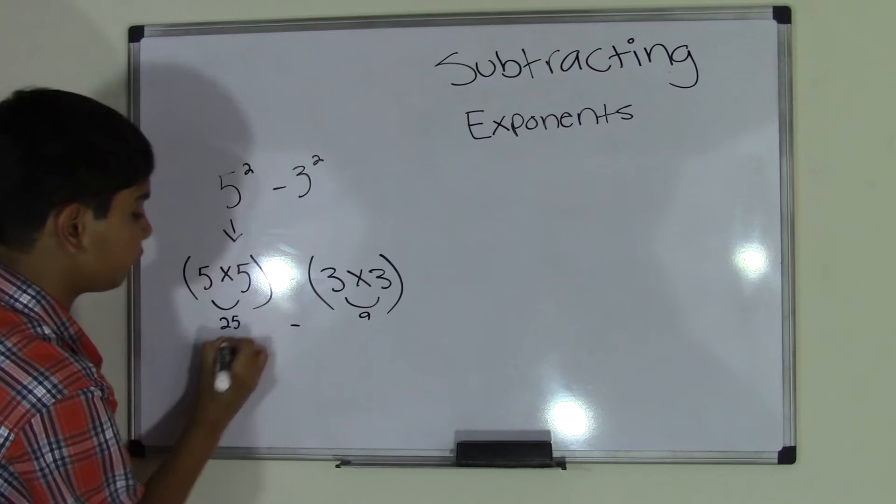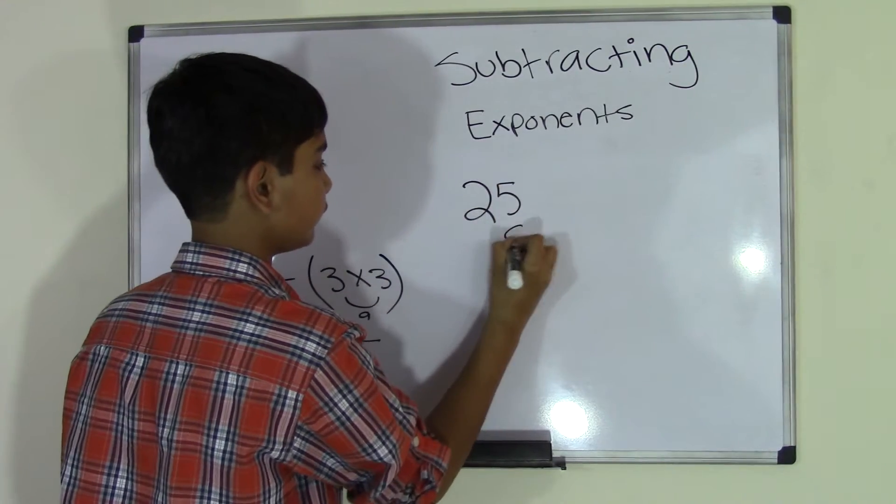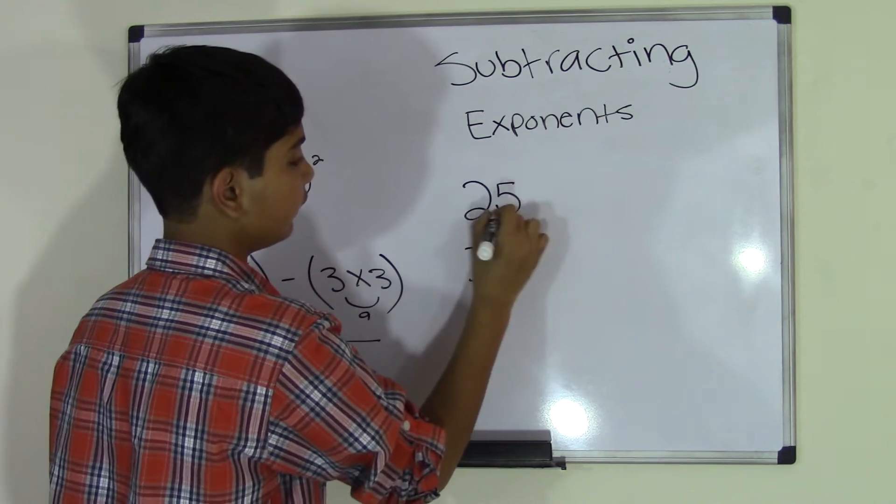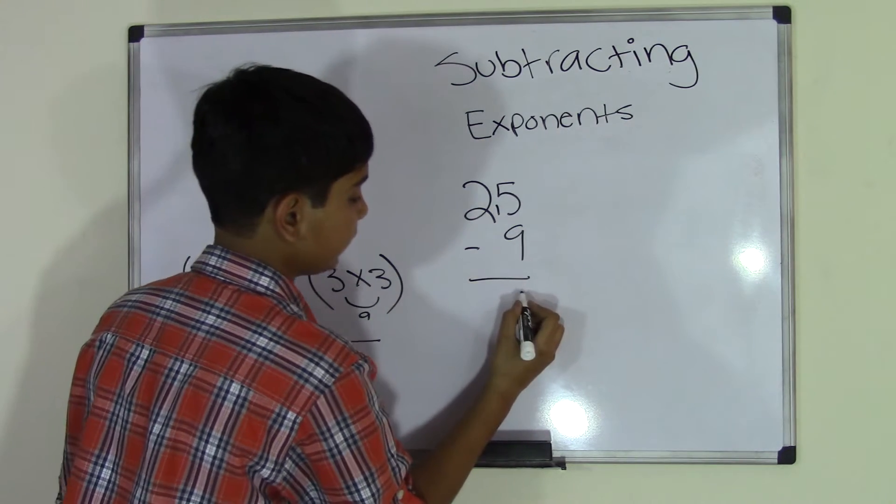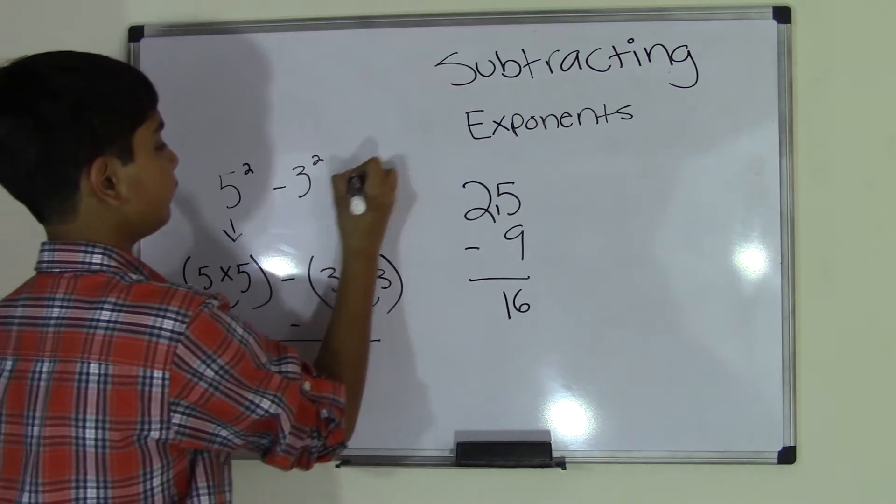So now we get a problem of 25 minus 9. We can go ahead and do that over here. 25 minus 9: you borrow that 1, 15 minus 9 is 6, you got 1 from here, so we get a difference of 16.